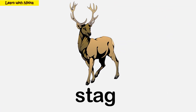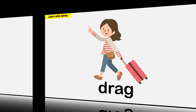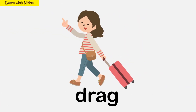The male deer is called stag. Sta, egg, stag. In this picture, the girl is dragging the suitcase. Drag, egg, drag.